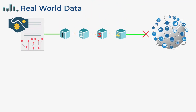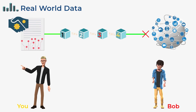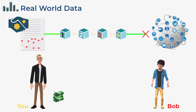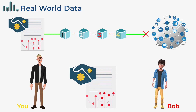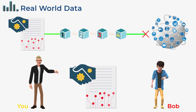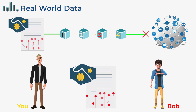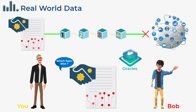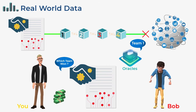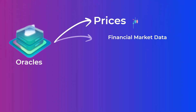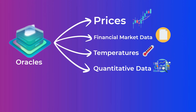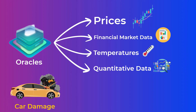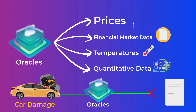Another issue is that smart contracts cannot get real-world data from the blockchain. For example, if you and Bob want to bet on the results of a match — you bet $50 on team 1 and Bob bets $50 on team 2, locking $100 in a smart contract — after the match ends, how does the smart contract know which team won? This can be partially solved by using oracles, which are services that provide real-world data to smart contracts. This data can be prices, financial markets data, temperatures, and other quantitative data. However, not all data can be communicated by oracles — accidental damage to cars, for example, cannot be provided by oracles to insurance companies.